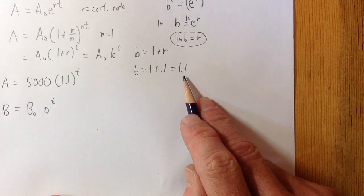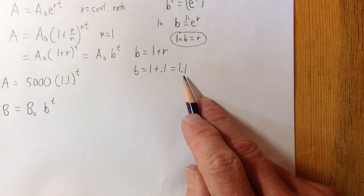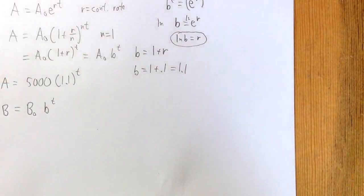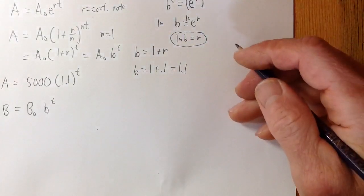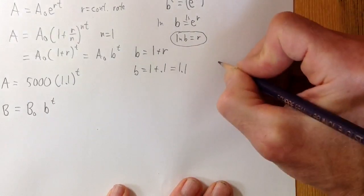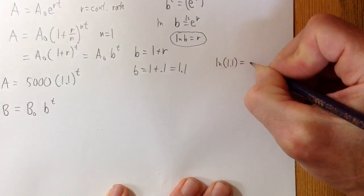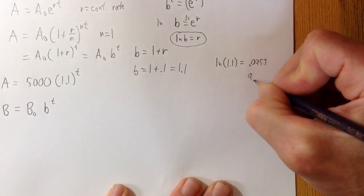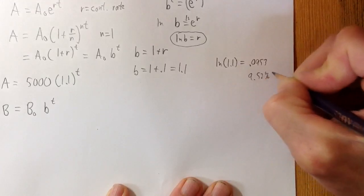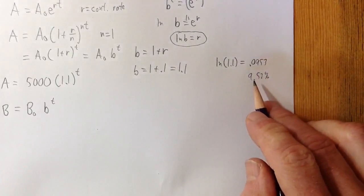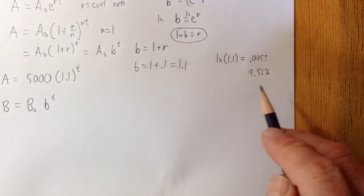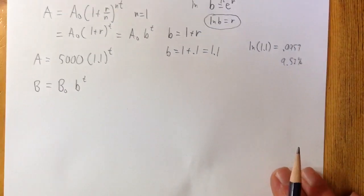For instance, in this case b is 1.1. If we want to know the continuous growth rate, it's going to be a little less than 10%. We take ln(1.1), which is about 0.0953 — that's about 9.53%. So if you have 10% more money at the end of the year, your actual continuous interest rate was 9.53%. You don't need to know that for this problem, but it's good to keep in mind.